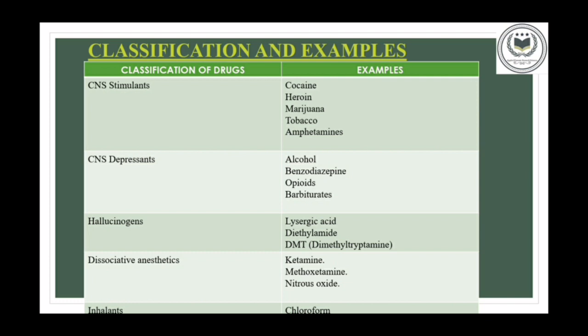Next comes inhalants. Inhalants are those drugs which include a wide variety of breathable substances that produce mind-altering results and effects. Some of the examples are toluene, chloroform, plastic cements, paints, hairspray, etc.